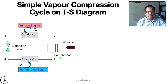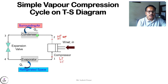Starting from point 1, the refrigerant is in vapor state at low pressure and low temperature. When it goes to the compressor, the vapor refrigerant is compressed isentropically, so its pressure and temperature both increase. At point 2 we have high pressure, high temperature vapor refrigerant. When it goes to the condenser, heat is rejected to the surroundings at constant pressure.